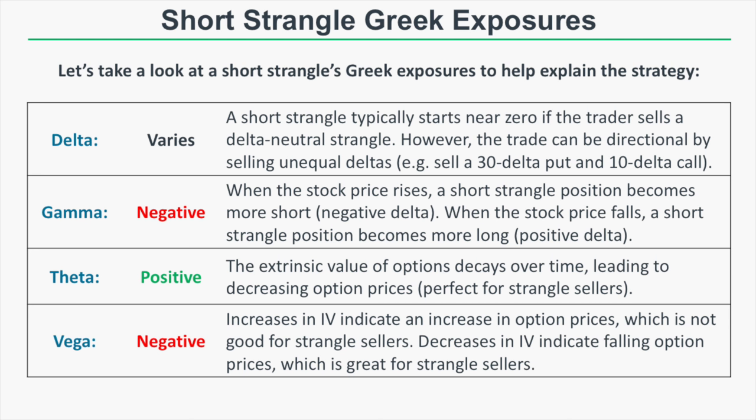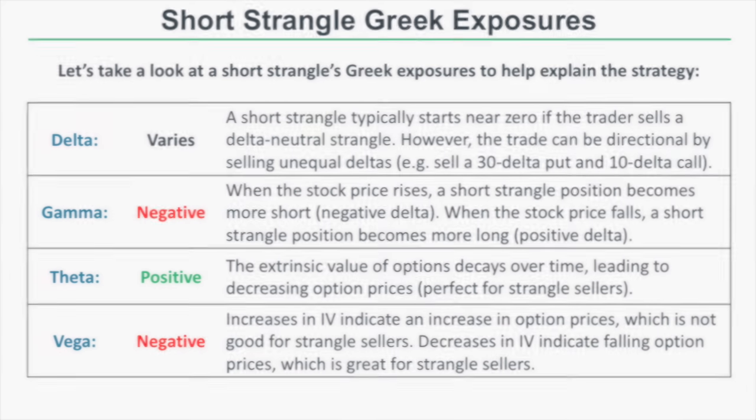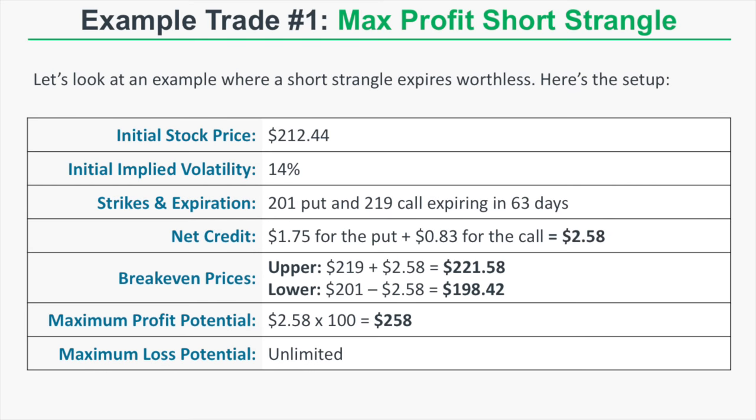Putting all the Greeks together: a short strangle profits from the passage of time when the stock price is between the short call and short put strikes, and from any decreases in implied volatility. Conversely, it loses money if implied volatility increases or if the stock price makes an explosive move in either direction. For a short strangle to work, you need the stock price to remain relatively calm between your short strikes.